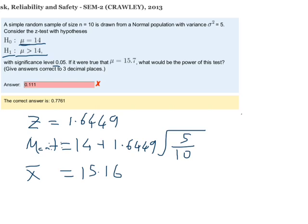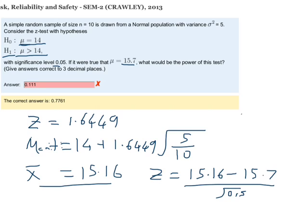So what's the probability of us getting a value of x-bar of 15.16 or higher? We do that the same way as we normally do with our z-statistic. So z is going to be equal to 15.16 minus 15.7, all divided by square root of 0.5, and that's going to give us minus 0.76.